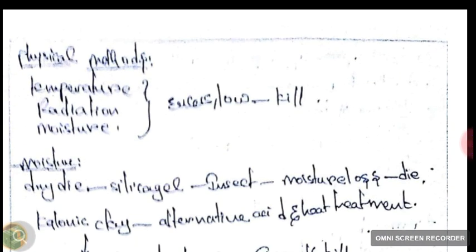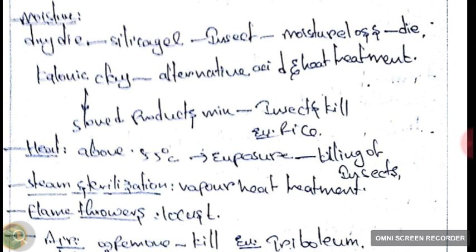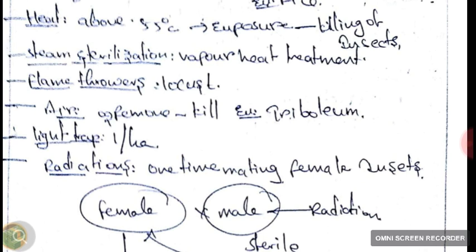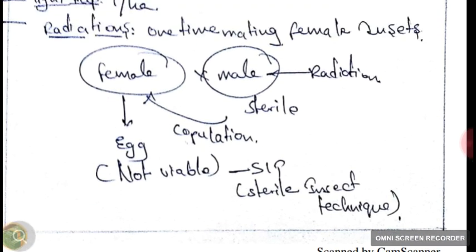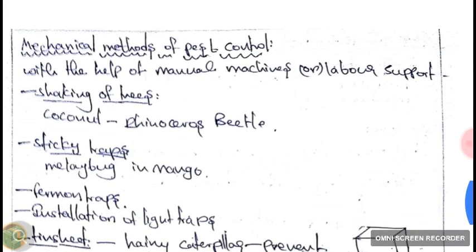In today's Green Coach we learned about physical methods of pest control. The factors — temperature, moisture, and radiation — are made available to insects in excess or lower amounts to kill them. For moisture deprivation we use silica gel on the insect body. Kaolin clay, prepared by alternate heating and acid treatments, is mixed with stored products. Heat above 55 degrees kills insects; steam sterilization also works. Flamethrowers are used for locusts, and depriving oxygen can kill Tribolium species. Light traps are used one per hectare. For one-time mating female insects, males are made sterile using radiation and mated with females, producing non-viable eggs — this is called the Sterile Insect Technique, or SIT.